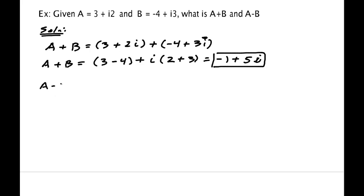And A minus B would be 3 plus 2i minus a minus 4 plus 3i. So, A minus B is 3 plus 4 plus i, 2 minus 3, and this answer is 7, and then minus i. So, let's draw pictures of that.